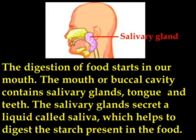The digestion of food starts in our mouth. The mouth or buccal cavity contains salivary glands, tongue, and teeth. The salivary glands secrete a liquid called saliva, which helps to digest the starch present in the food.